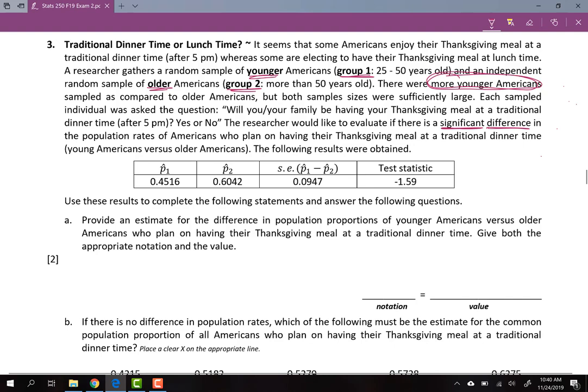Question A says: provide an estimate for the difference in population proportions of younger Americans versus older Americans who plan on having their Thanksgiving meal at a traditional dinner time. They want the notation and the value. We read and see that they want the difference in the population proportion, so that might look something like P1 minus P2. It wants a value, and this value as written is really unknown, so they want you to estimate this value. Remember, an estimate of a parameter is really just asking for the statistic.